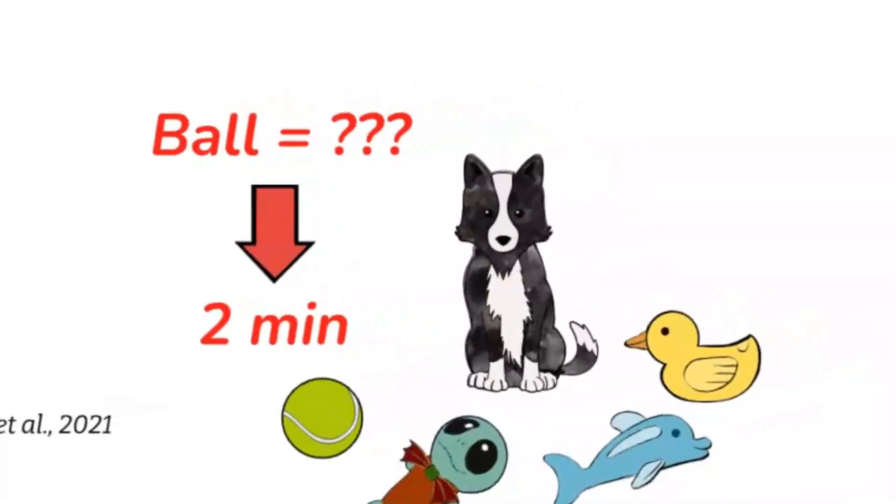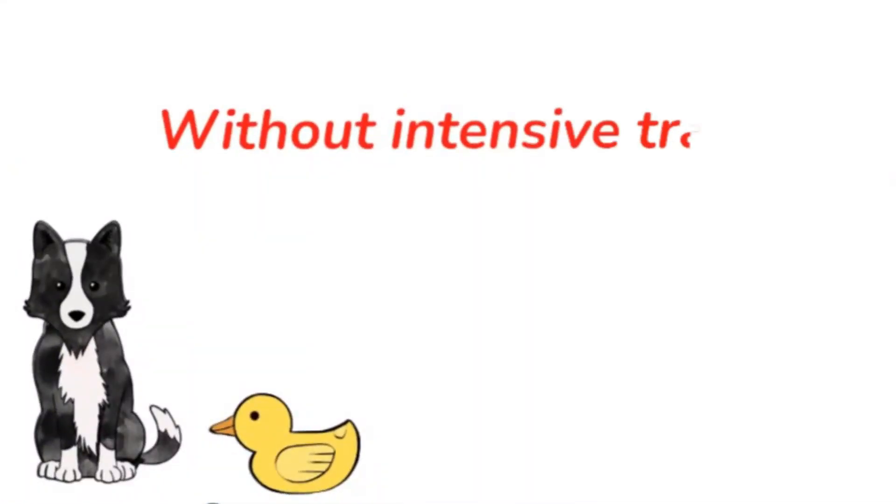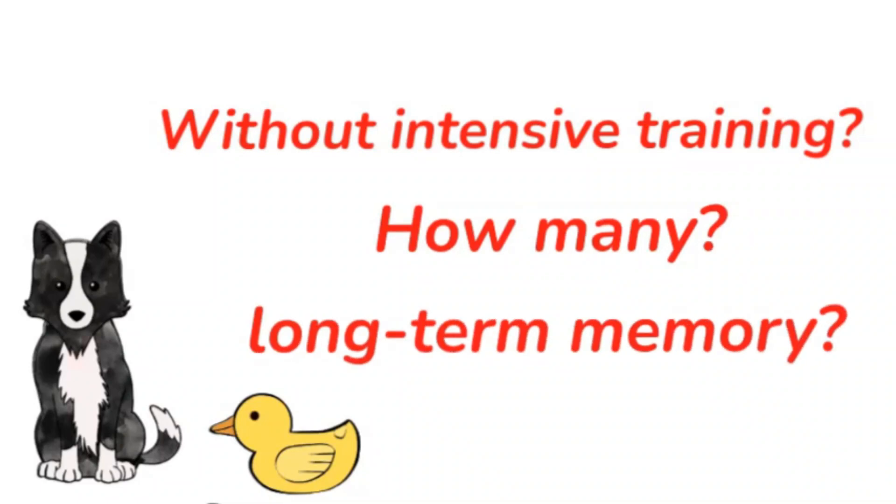So, can dogs learn multiple new object names without intensive training? How many object names can they learn? And can they form a long-term memory of these object names?